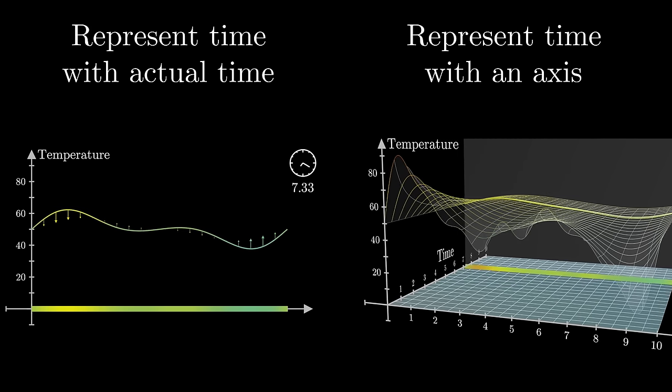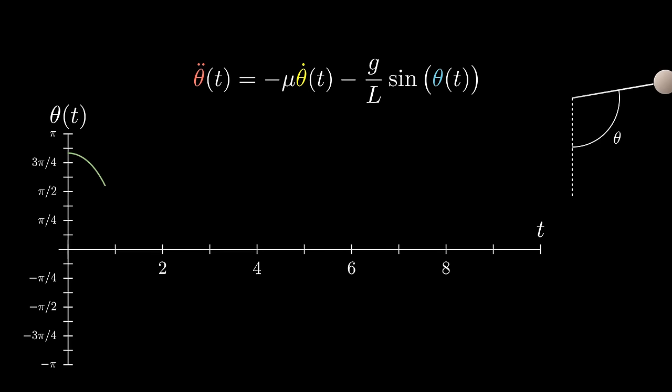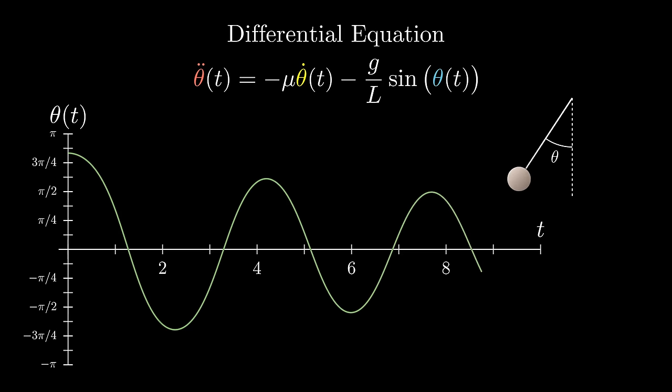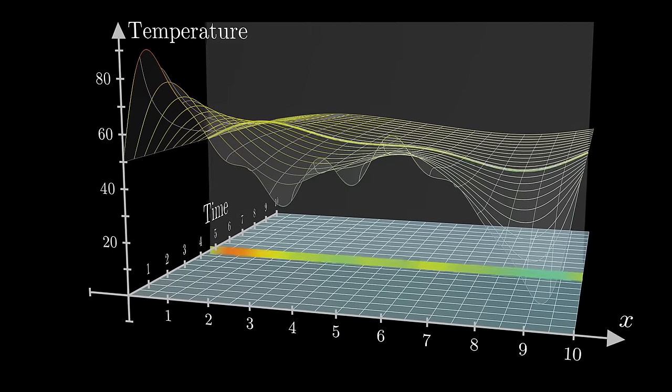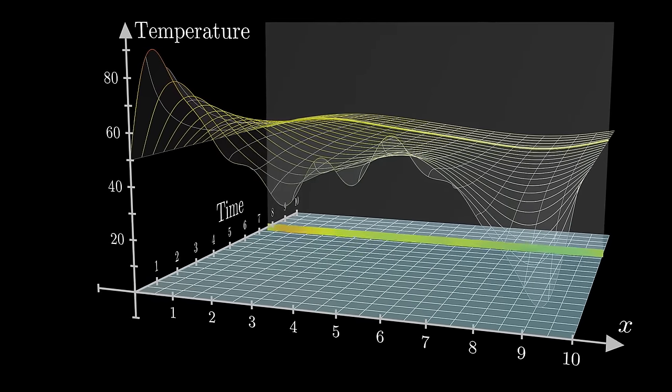Last chapter, we looked at some systems where just a handful of numbers changed over time, like the angle and angular velocity of a pendulum, describing that change in the language of derivatives. But when we have an entire function changing with time, the mathematical tools become slightly more intricate.